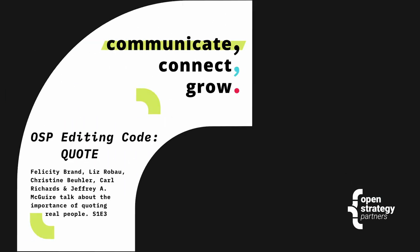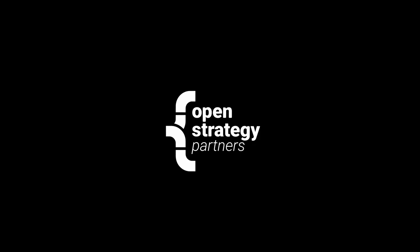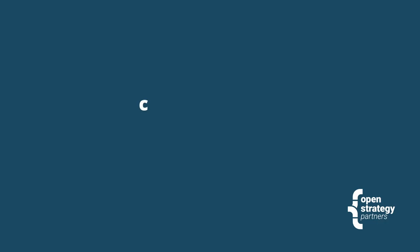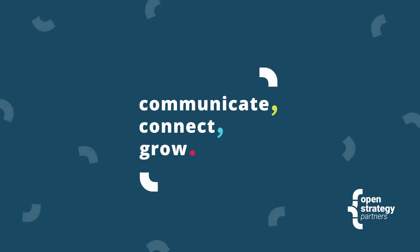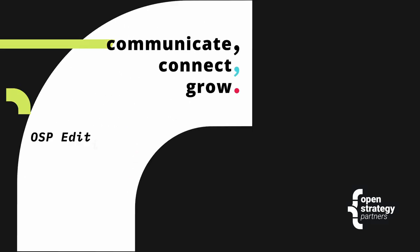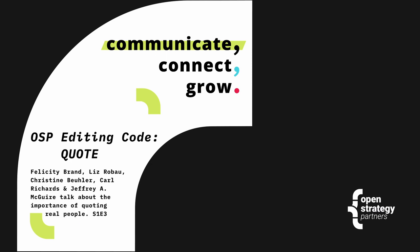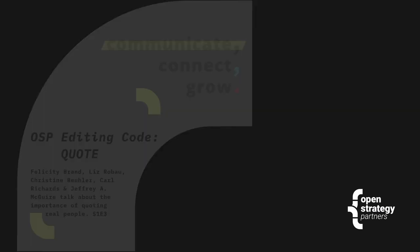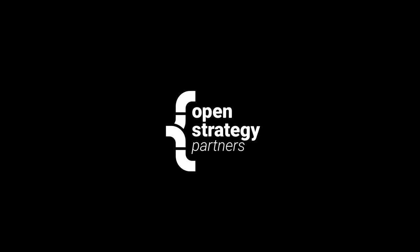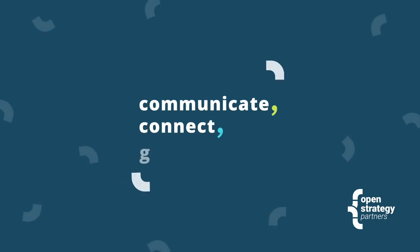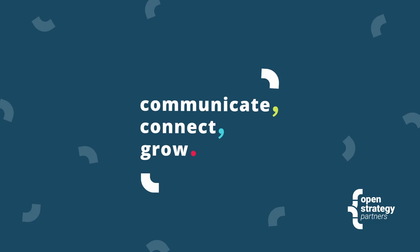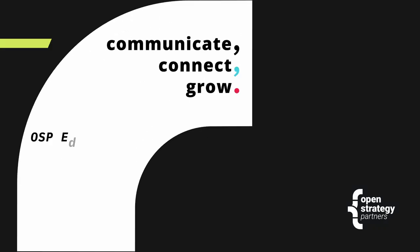We divide our episodes across three themes: communicate, connect, and grow. This is a Communicate episode, and we're talking about your writing with our editing code, quote. The quote editing code falls into phase B, the flow and sections phrase of the process. It's about establishing trust with your reader by including evidence from a subject matter expert.